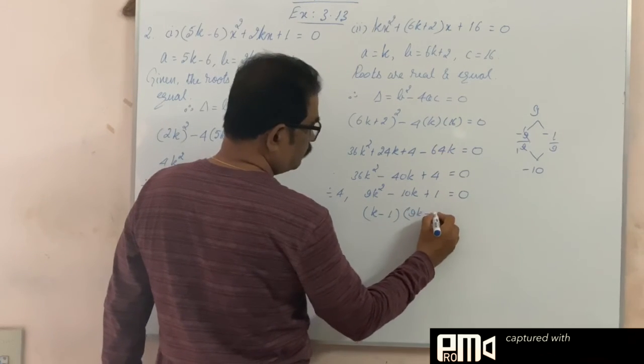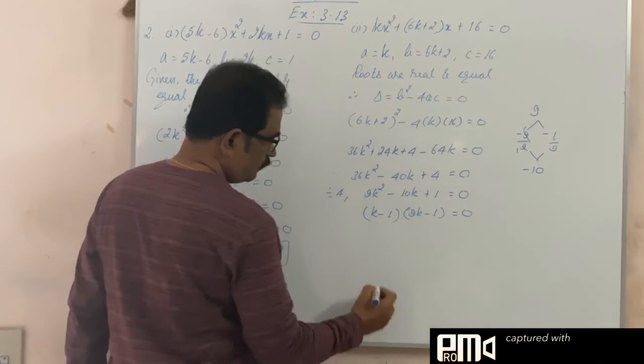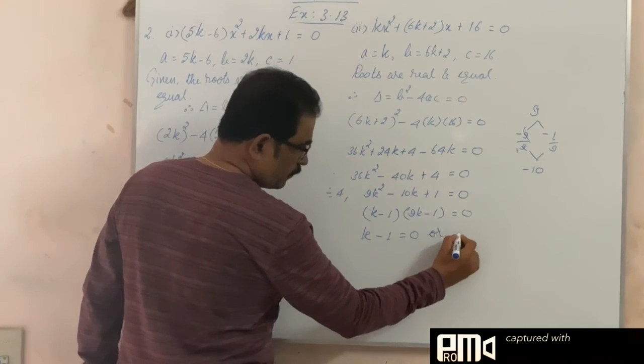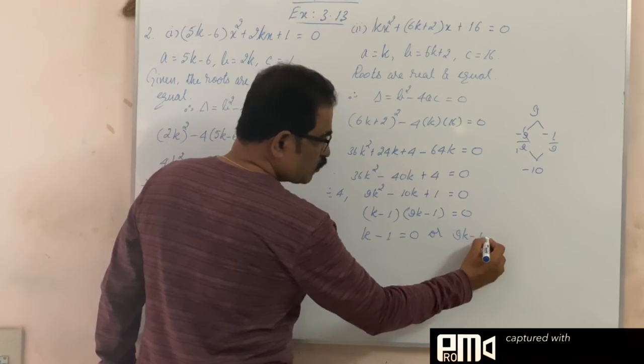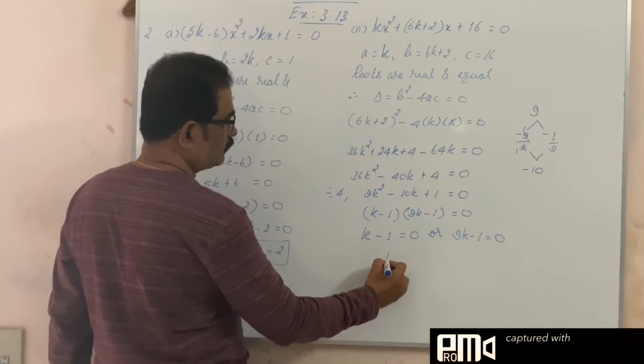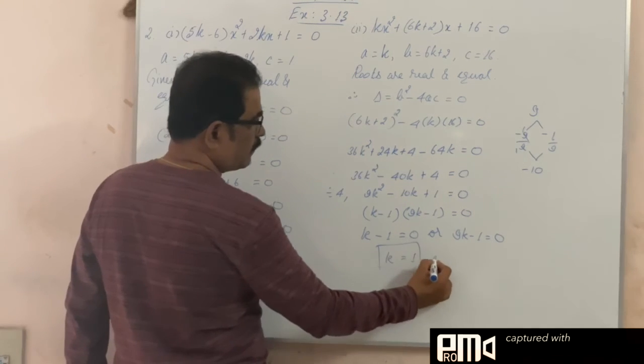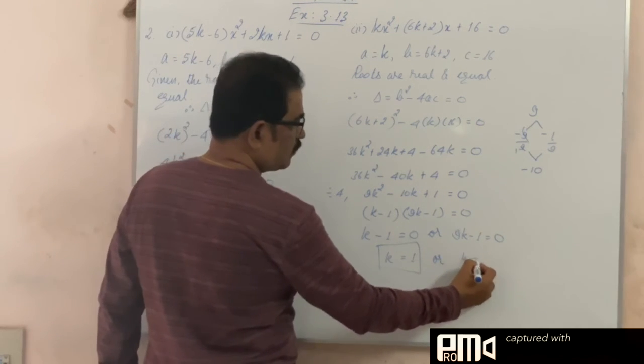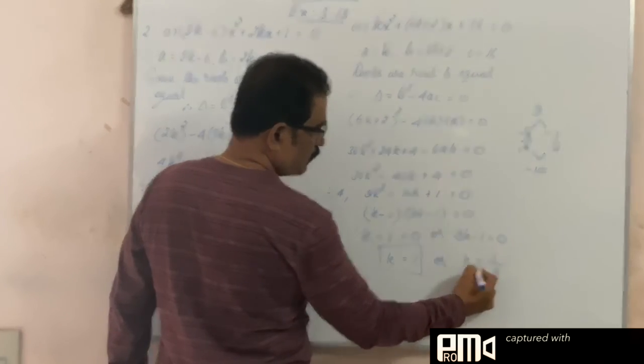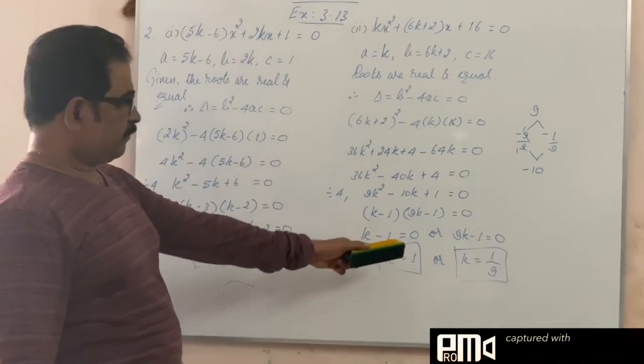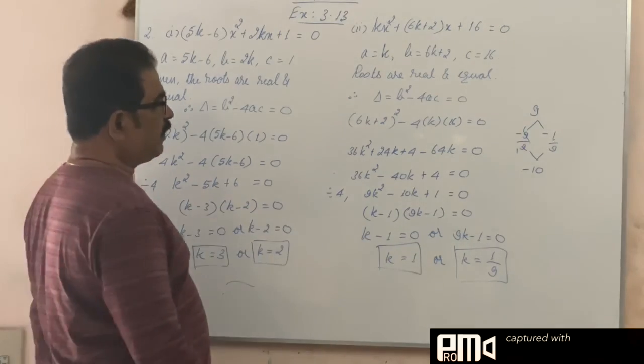Either k minus 1 is equal to 0, or 9k minus 1 is equal to 0. So, k is equal to 1, or 9k is equal to 1, so k is equal to 1 by 9.